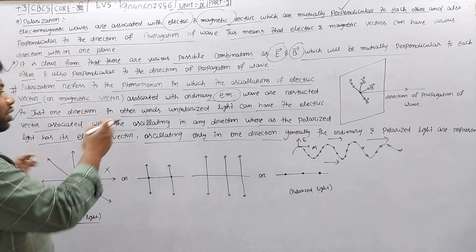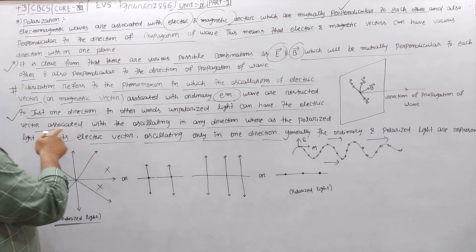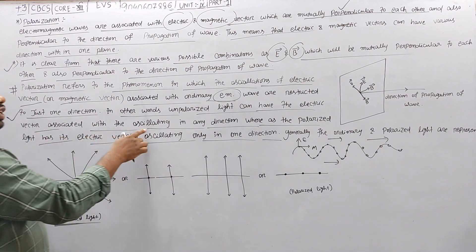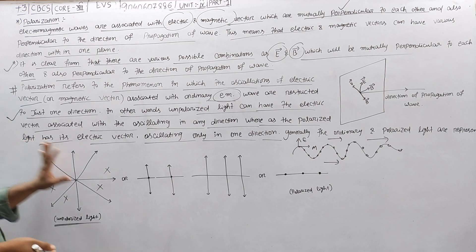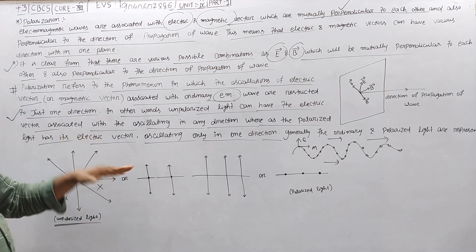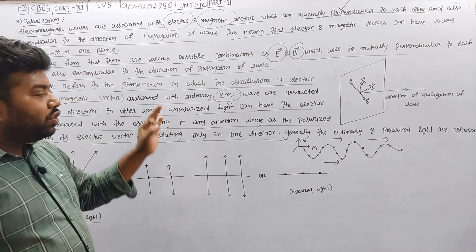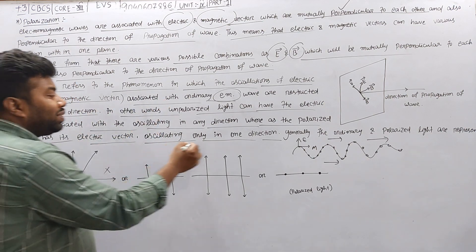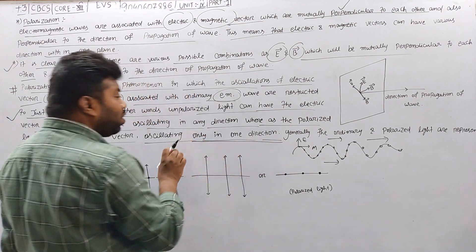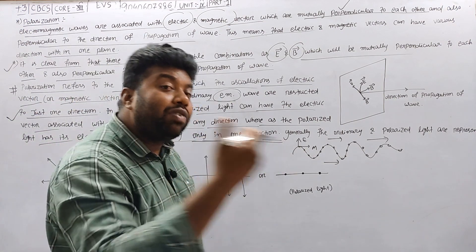In other words, unpolarized light can have an electric vector associated with oscillation in any direction — it will oscillate from all directions. But polarized light will oscillate only in one direction — in a particular direction.